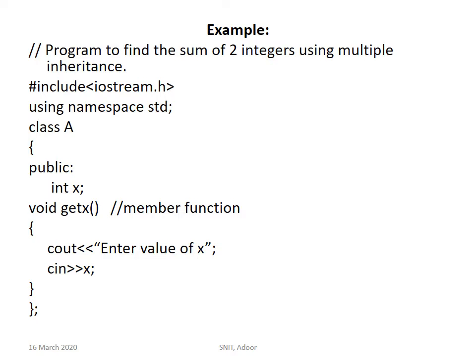I'll explain with the help of an example. Inheritance is an important question in university exams. Hash include iostream, using namespace std — the two standard lines. Then class A, the parent class. Access specifier is public. You have declared a variable X as integer. You have written a member function void getX — where you get the value of X. C-out 'enter the value of X', C-in X. That is class A. Next is class B. Here the access specifier is public, Y is an integer, void getY is the member function — C-out 'enter the value of Y', C-in Y. So in class A you get the value of X, and in class B you get the value of Y.